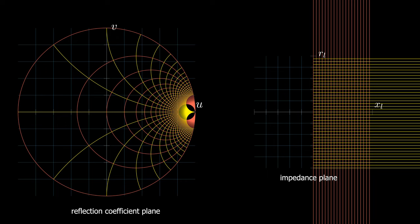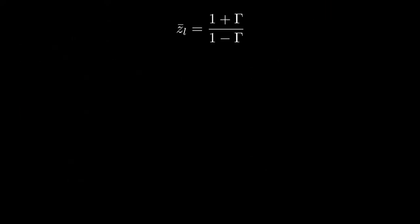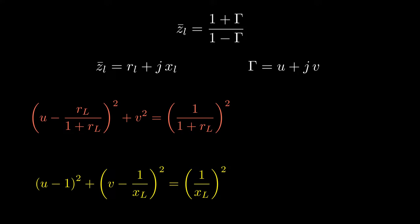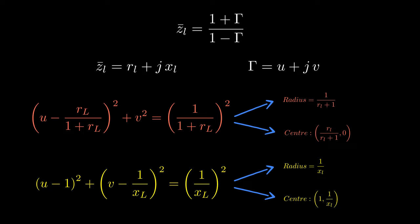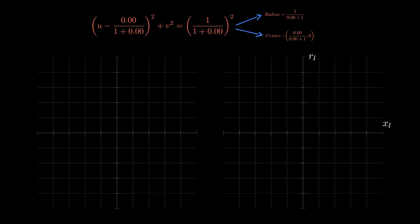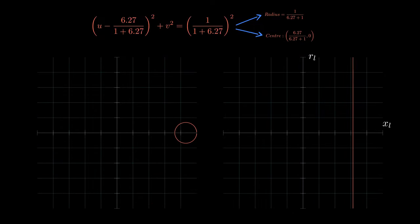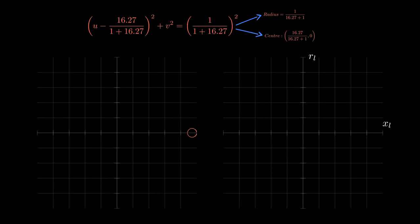Now let's see how these circles are built up mathematically. The derivation of the Smith chart in textbooks begins with the impedance-reflection coefficient formula. Substituting the impedance and the reflection coefficient by their real and imaginary parts and rearranging, we get two final equations. The real part of the impedance — the resistance — is represented in the reflection coefficient plane by a circle having a certain radius and centered at a specific point. The imaginary part of the impedance is also represented by a circle with a certain radius and center. These two equations build up the whole Smith chart. For instance, the zero resistance circle is centered at the origin and has a radius of 1. Sweeping the resistance value gives different circles; as r increases, the center shifts toward the right and the radius becomes smaller and smaller. When r approaches infinity, the radius approaches zero and the center approaches the point (1, 0).